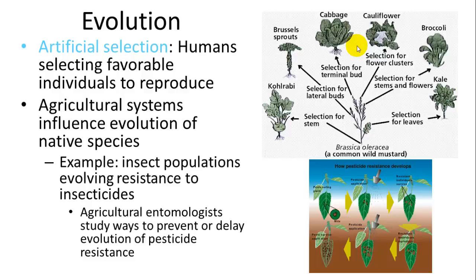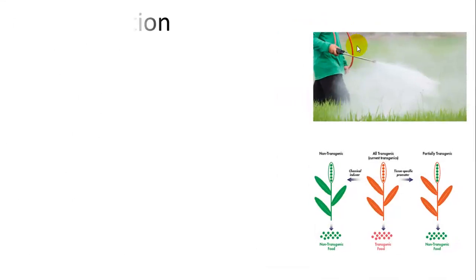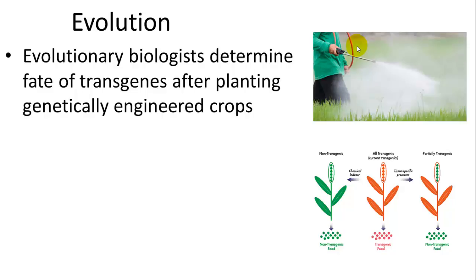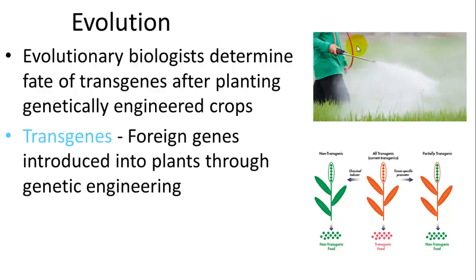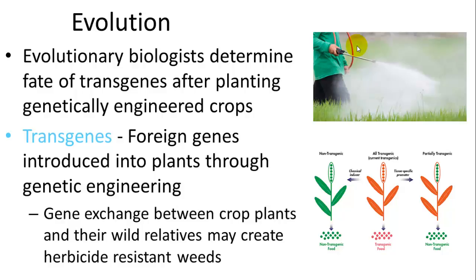Another example is insect populations evolving resistance to insecticides. You spray insecticides on plants, it kills most insects, some survive, those survivors reproduce abundantly, and then that population can resist the pesticides. Similarly, evolutionary biologists track transgenes — foreign genes introduced via genetic engineering — which can enter other plants through interbreeding and create herbicide-resistant weeds.